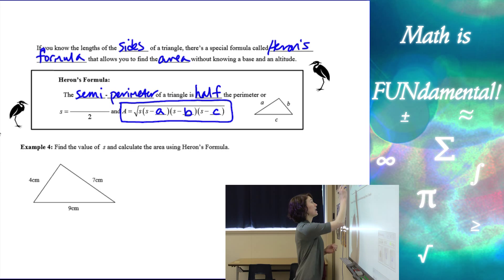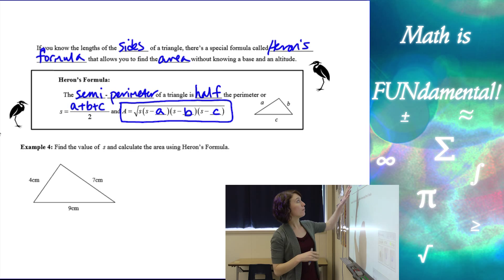Or if we have side lengths A, B, and C, you can find that by adding the sides together and then dividing by two. And then we have this formula. So it's going to take a little bit of practice to really get this formula memorized, but I know you guys can do it.